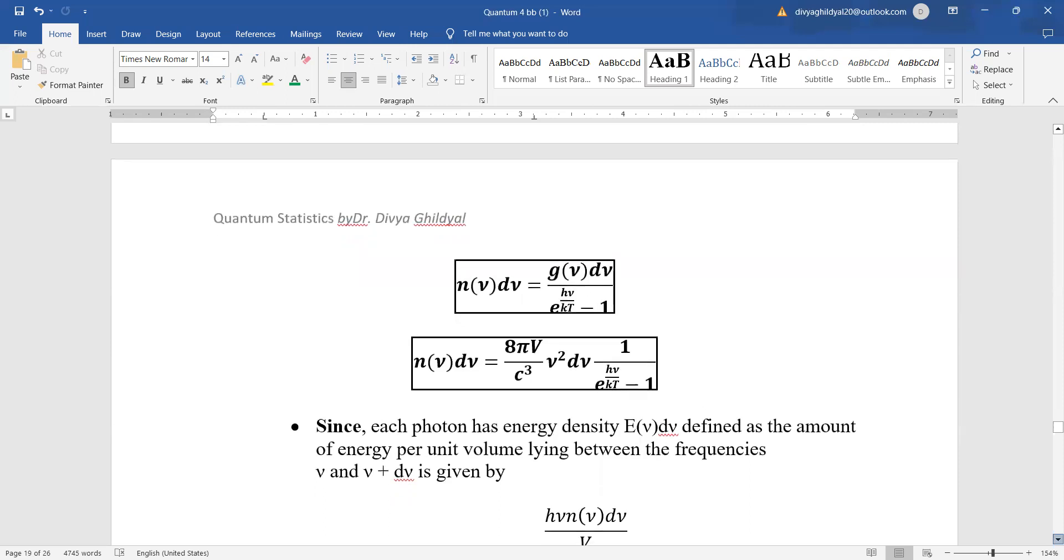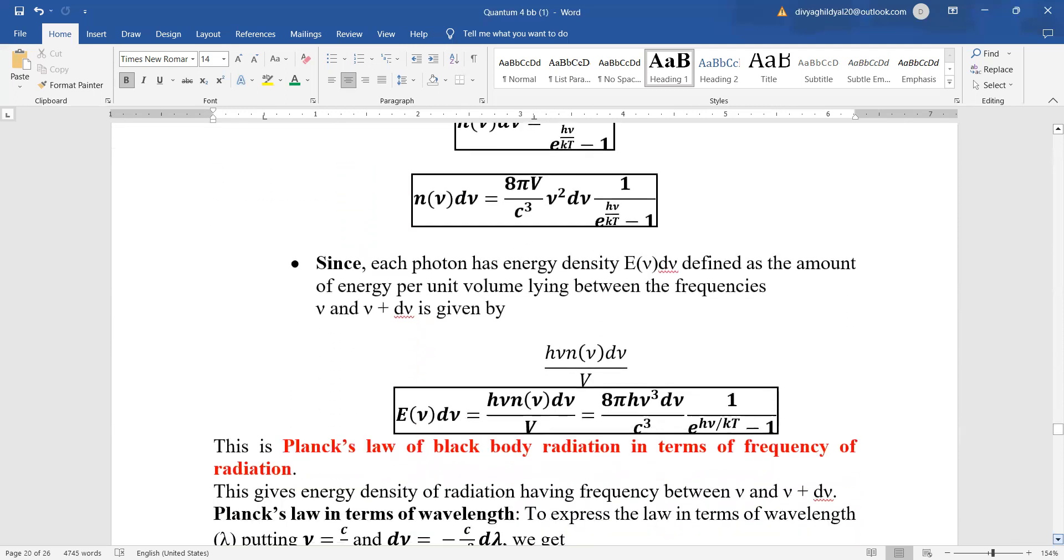Each photon has energy density e mu d mu, defined as the amount of energy per unit volume lying between frequencies mu and mu plus d mu, given by e mu d mu equals h mu n mu d mu by V, which equals 8 pi h mu cubed d mu upon c cubed times 1 upon e to the power of (h mu by kT) minus 1. This is Planck's law of black body radiation in terms of frequency.